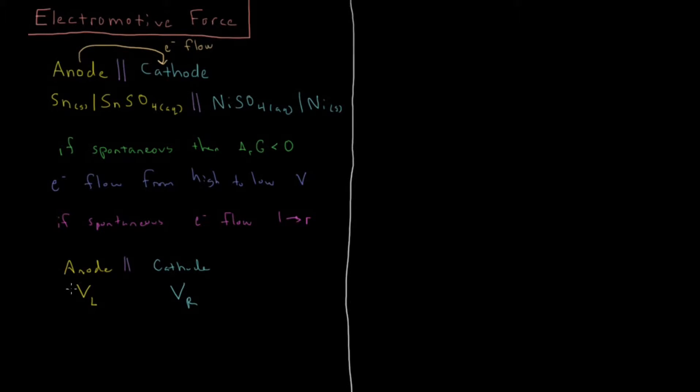So for our delta V that our electron feels, that's just going to be the voltage on the right minus the voltage on the left.